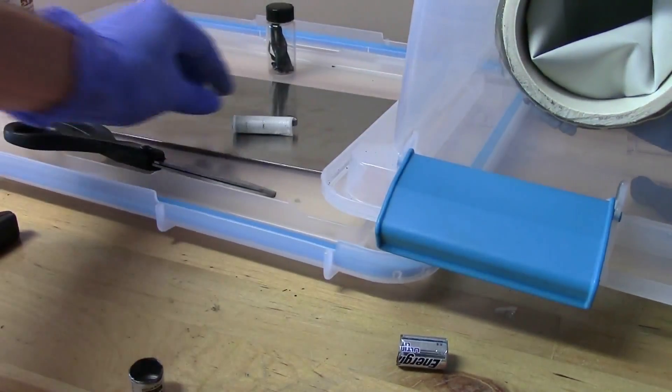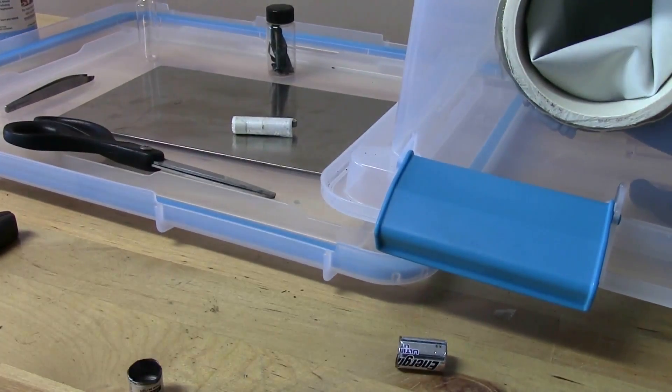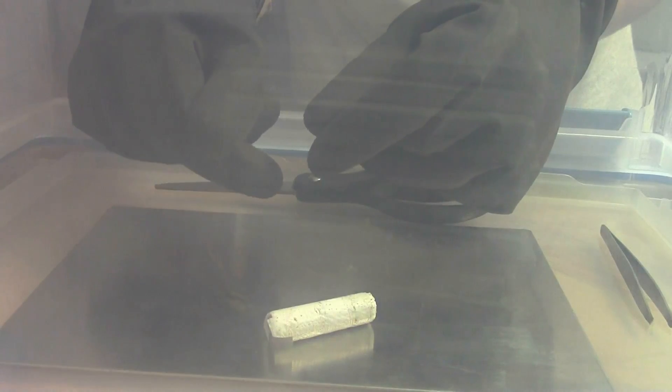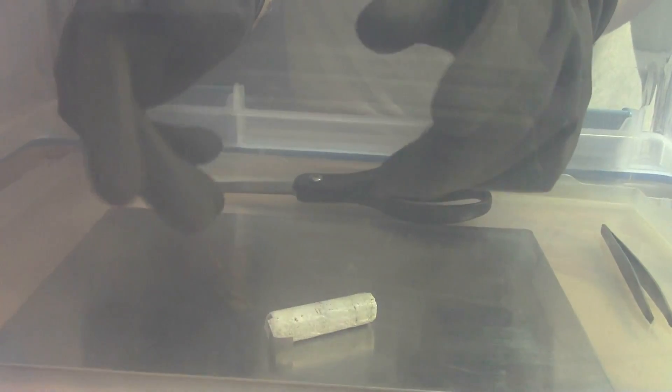All right glove box is filled with argon for about 25 minutes so that's a seven or eight volume purge so we should be good to go. Again this is the jelly roll interior of the battery and now all I should need to do is unroll it.